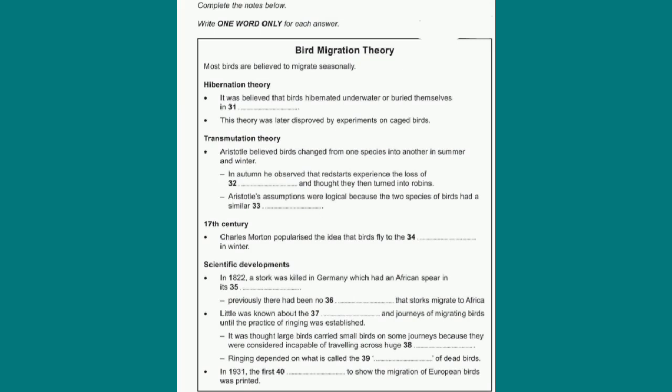One of the key moments in the development of migration theory came in 1822, when a white stork was shot in Germany. This particular stork made history because of the long spear in its neck, which, incredibly, had not killed it. Everyone immediately realised this spear was definitely not European. It turned out to be a spear from a tribe in central Africa. This was a truly defining moment in the history of ornithology because it was the first evidence that storks spend their winters in sub-Saharan Africa. You can still see the arrow stork in the zoological collection of the University of Rostock in Germany.